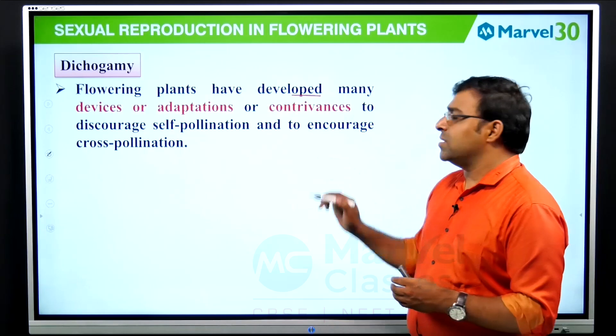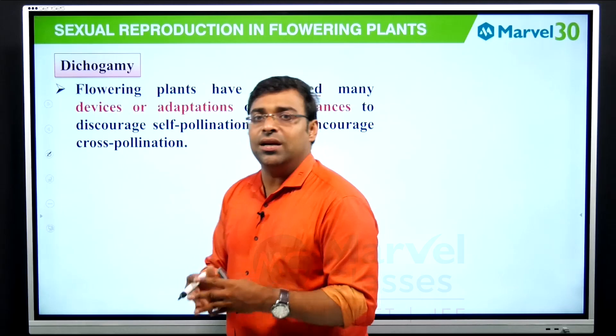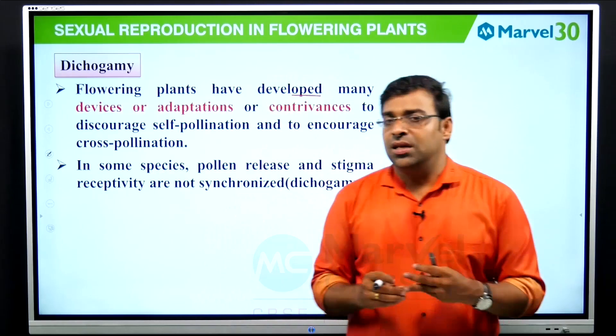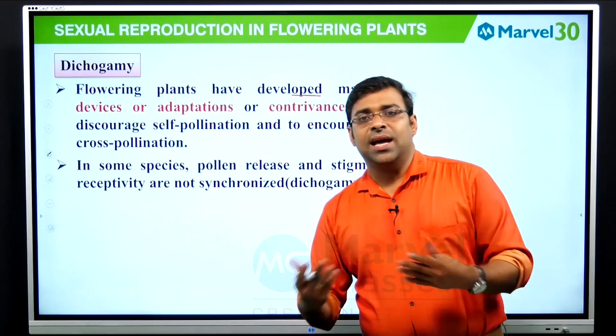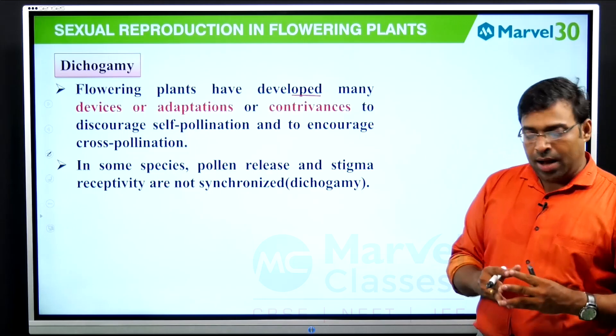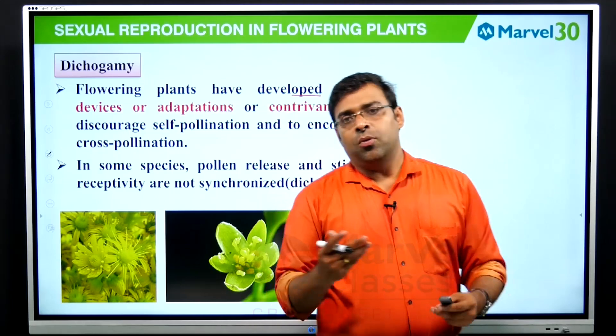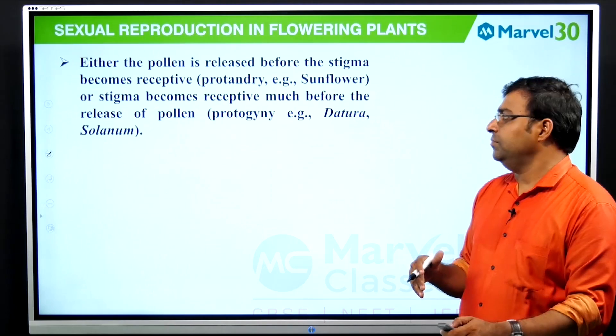Flowering plants have developed many devices or adaptations to discourage self-pollination and to encourage cross-pollination — because self-pollination leads to inbreeding depression. In some species, the pollen release and stigma receptivity are not synchronized. This is basically called dichogamy, where the release of the pollen grain and the receptivity of the stigma do not occur at the same time.